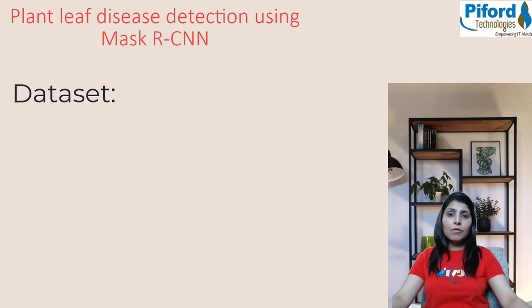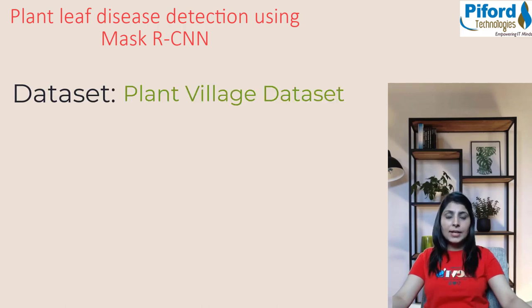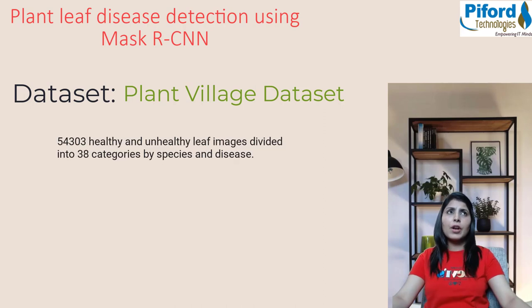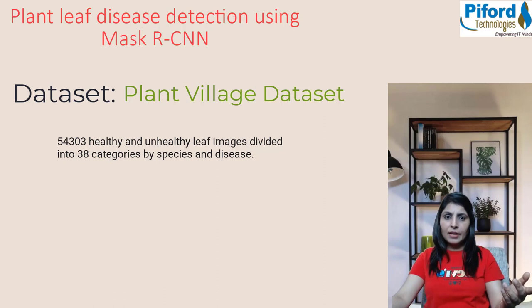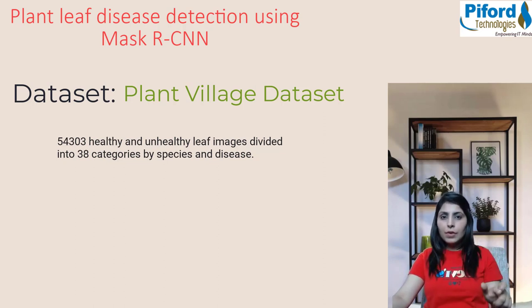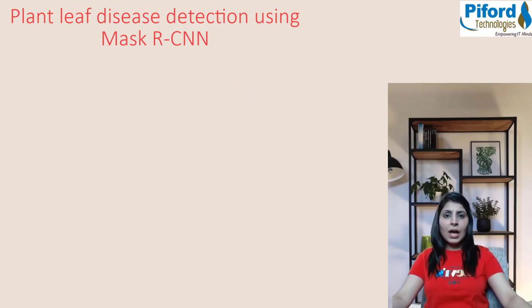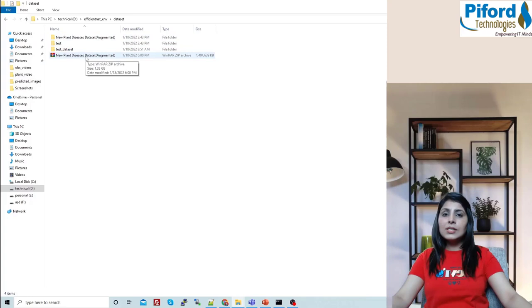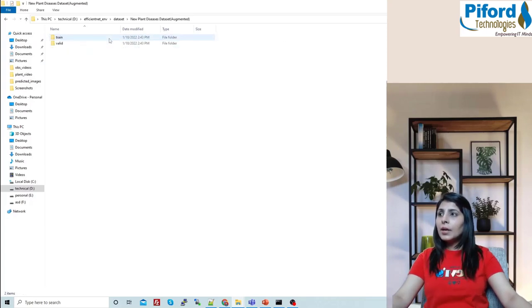The dataset I'm using for today's class is the Plant Village dataset. This dataset consists of around 54,000 images, including healthy and unhealthy leaves, and we have 38 different categories — 38 different classes. Let me show you this dataset first and then we'll move further. When you download this dataset from the internet, you will get a zip file.